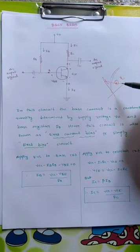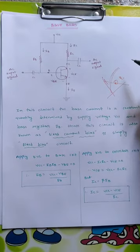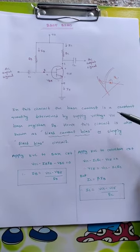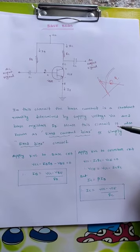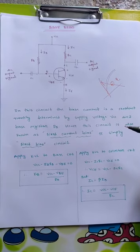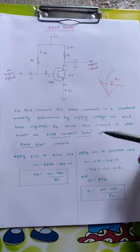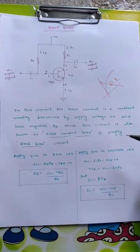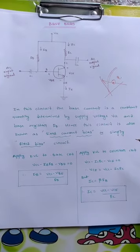The first technique is the base bias circuit. In this circuit, the base current is a constant quantity determined by supply voltage VCC and base resistor RB. Hence, this circuit is also known as fixed current bias or simply fixed bias circuit.